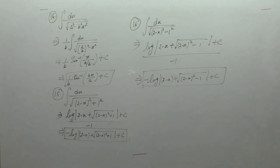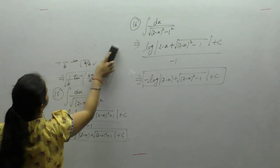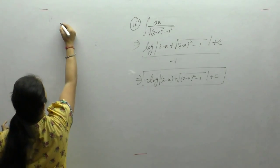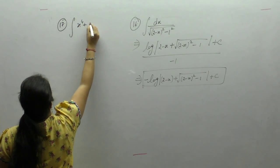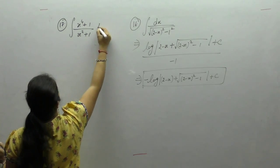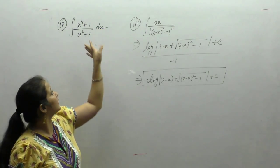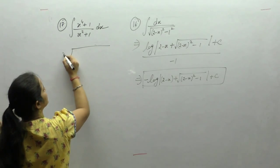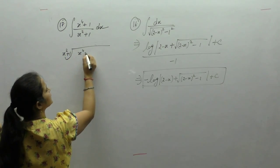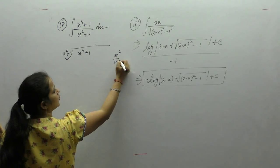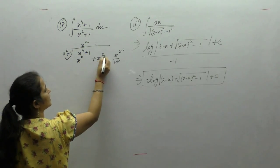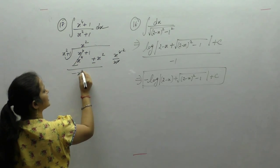Next is the integral of (x⁴ plus 1) upon (x square plus 1). Here the degree of numerator is greater than the degree of denominator, so first we divide this polynomial: x square plus 1 into x⁴ plus 1. Divide x⁴ by x square, we get x square. Multiply x square into x square is x⁴; 1 into x square is x square. Remainder: minus x square plus 1.